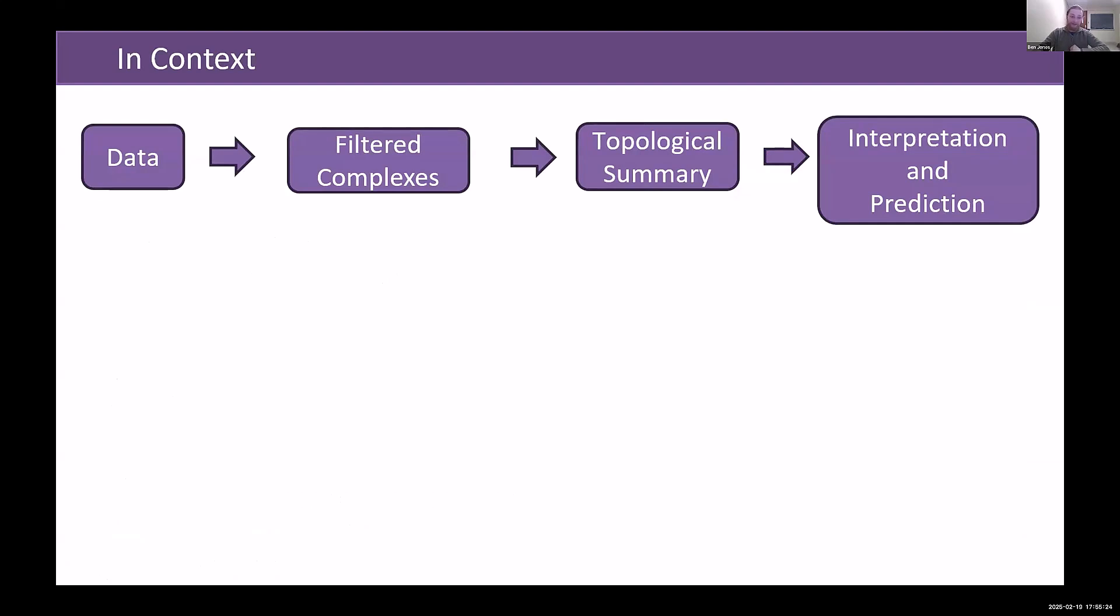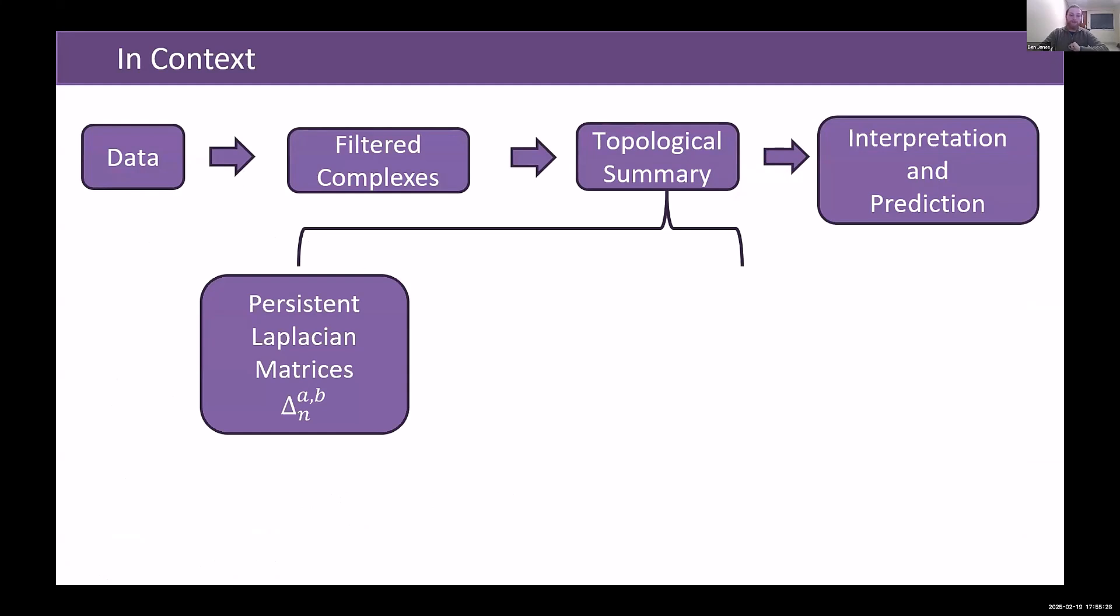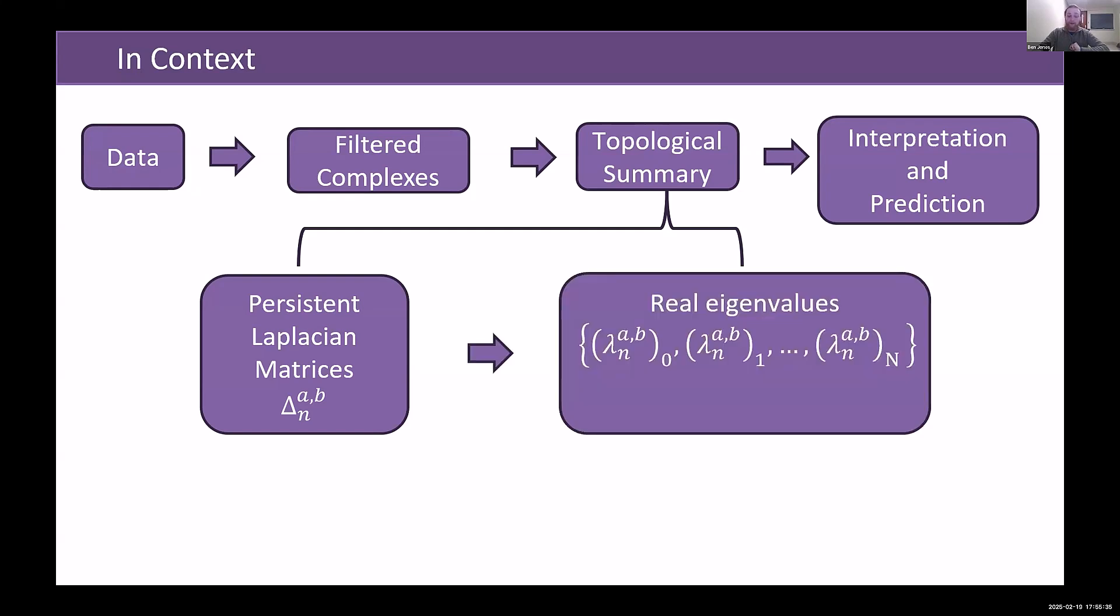The persistent Laplacian usually fits in the concept of topological summaries. So you compute these persistent Laplacian matrices for a filtration pair A, B, and some dimension n, and we turn it into, or we compute its eigenvalues. They're real valued and non-negative, so we can order them, and it turns out that the zero eigenvalues have multiplicity corresponding to the persistent Betti number.